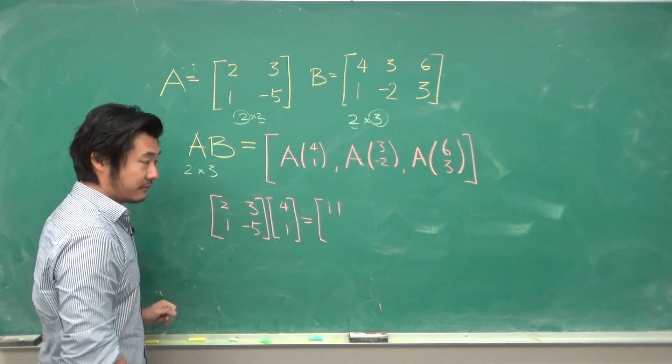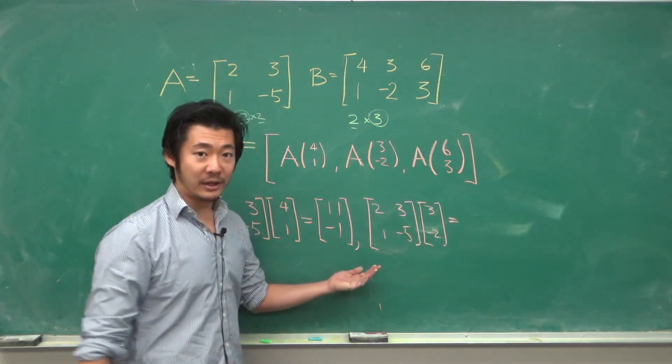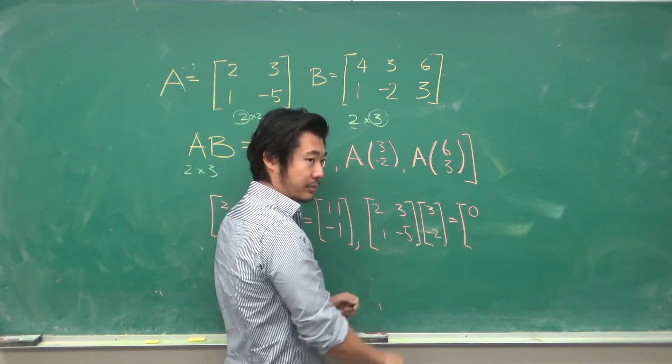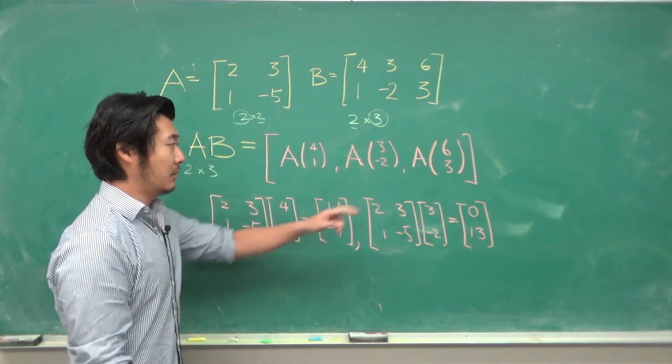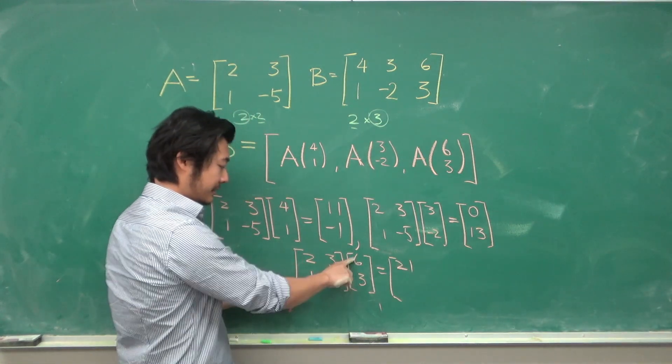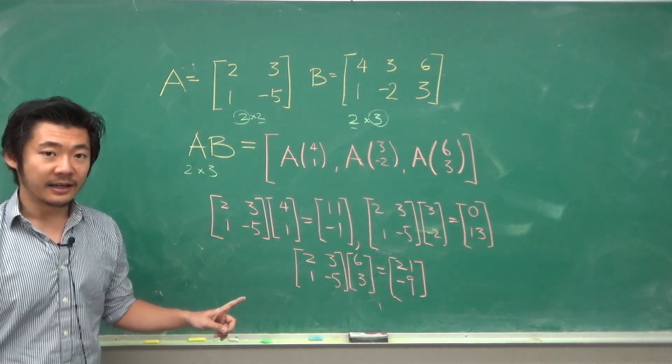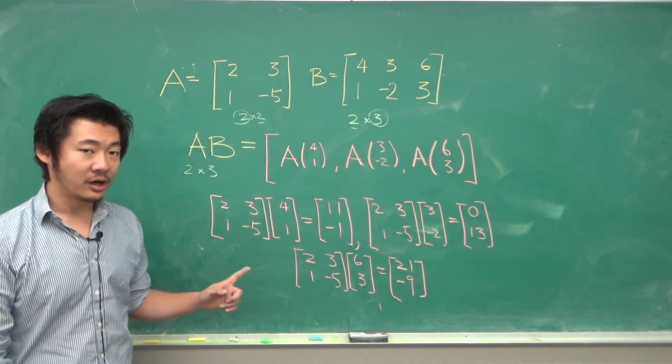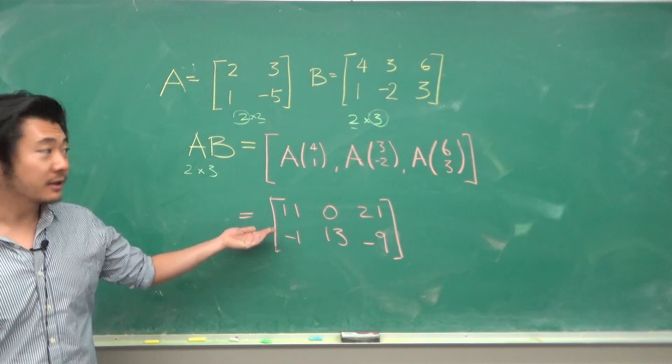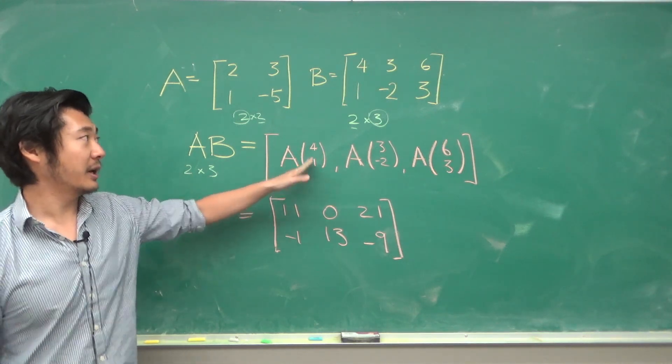We repeat the process: 6 minus 6 is 0, 3 plus 10 is 13, and the last column, 12 plus 9 is 21, 6 minus 15 is negative 9. Combining all the columns together, the product A times B is the matrix where each of the columns are the matrix multiplication of A times the columns of B.